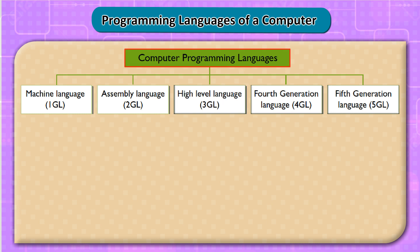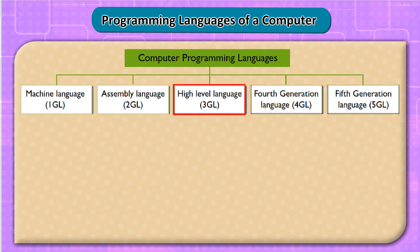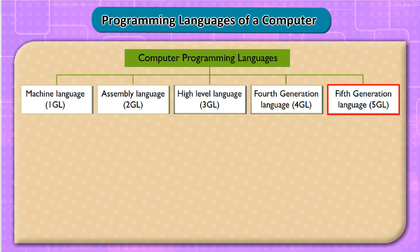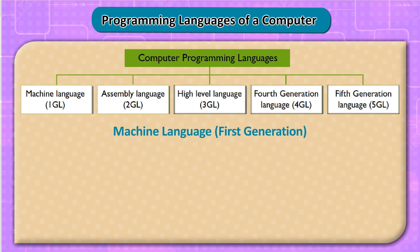Computer programming languages are classified into five generations: Machine Language (1GL), Assembly Language (2GL), High-Level Language (3GL), 4th Generation Language (4GL), and 5th Generation Language (5GL).